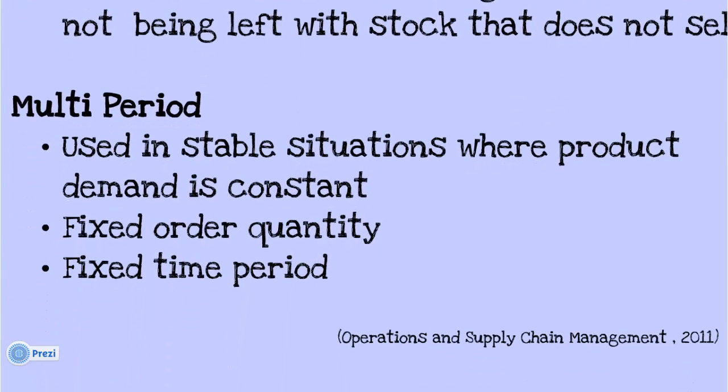On the other hand, the multi-period model is used again and again in stable situations where product demand is constant, price does not vary, ordering costs stay the same and all orders for the product will be filled. It is used when there is a fixed order quantity, where orders are placed for a set amount each time and the placement of an order is done when an event occurs such as reaching a minimum stock level.